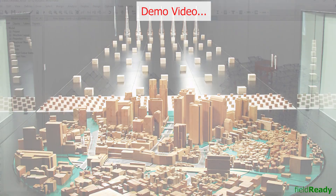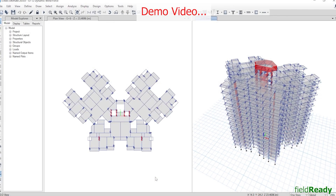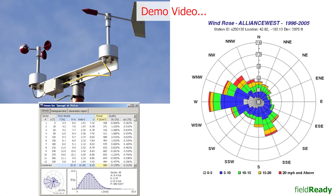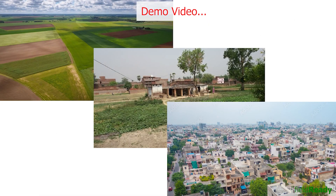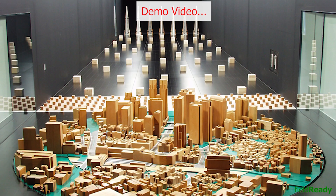Now we know the importance of wind tunnel tests, so let's quickly understand how this test is performed. First, the wind climate analysis is done for the area at which the building is to be constructed. In wind climate analysis, we find out the maximum three-second peak gust speed experienced by the building at the site location in the last 50 years. The terrain category is also determined, as this plays an important role in the wind profile.